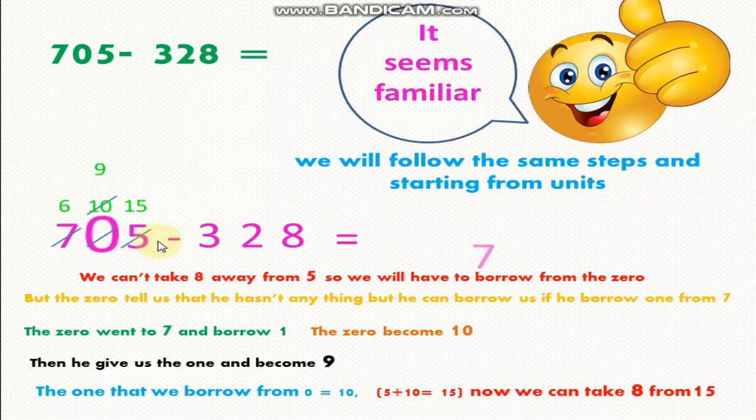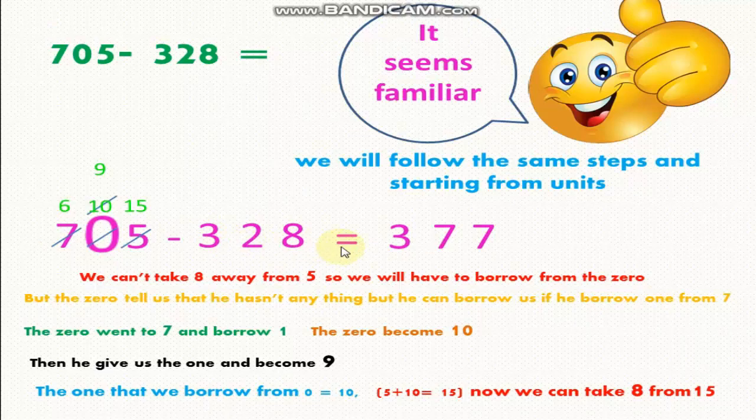15 minus 8 equals 7. 9 minus 2 equals 7. 6 minus 3 equals 3. So 705 minus 328 equals 377.